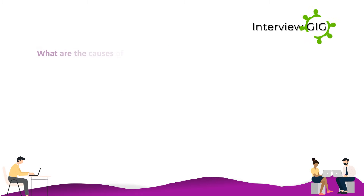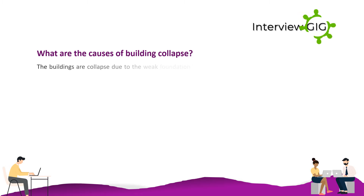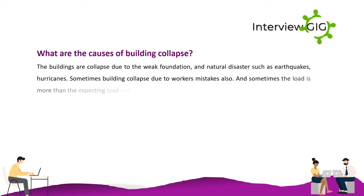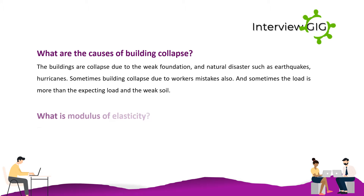What are the causes of building collapse? Buildings collapse due to weak foundations, natural disasters such as earthquakes and hurricanes. Sometimes buildings collapse due to workers' mistakes. Sometimes the load is more than the expected load, or due to weak soil.